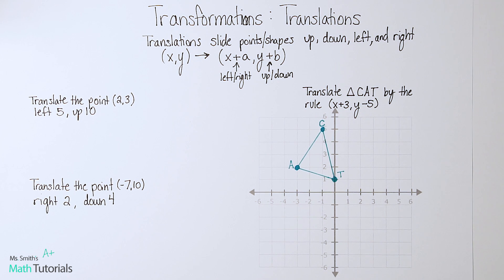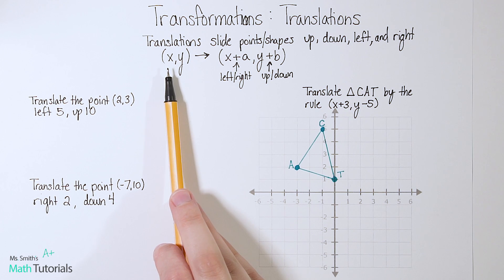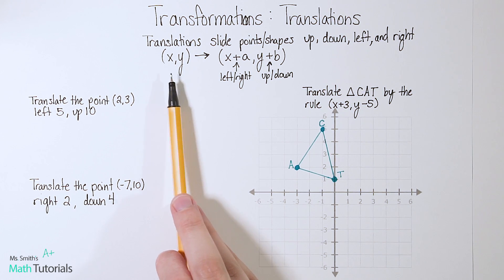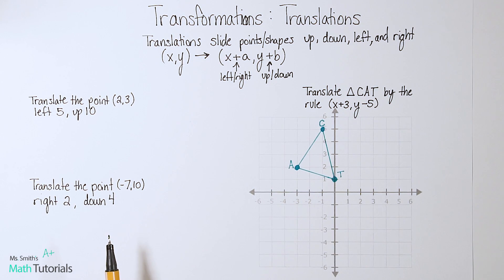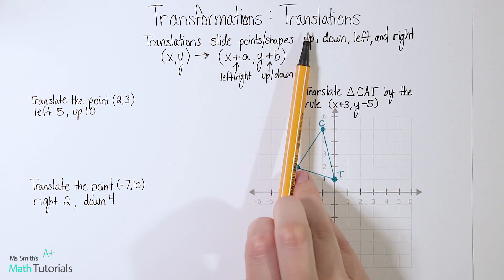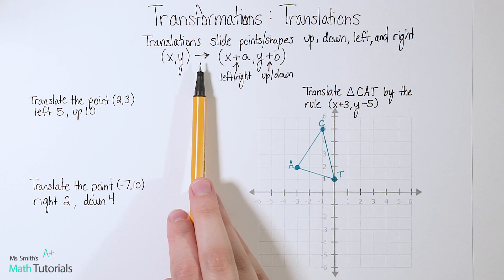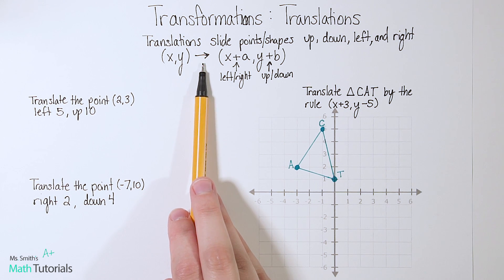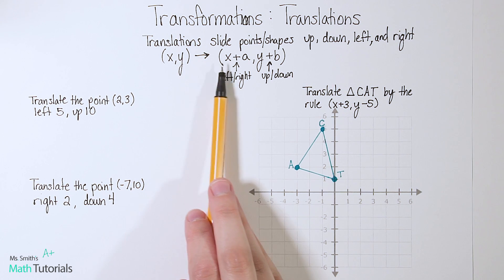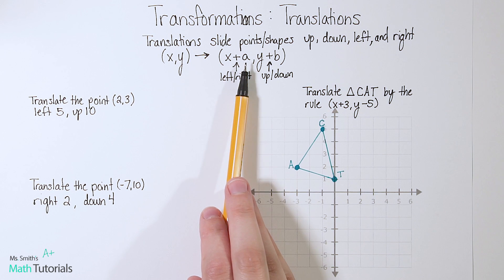The way we can tell how a shape is going to be moved is this is our rule. I explained in the previous video that we have a bunch of rules for different types of transformations. For translation, the rule is (x,y) becomes x plus a.